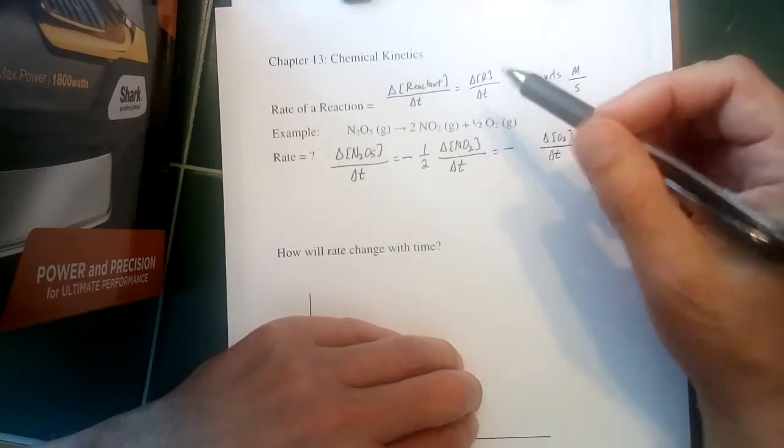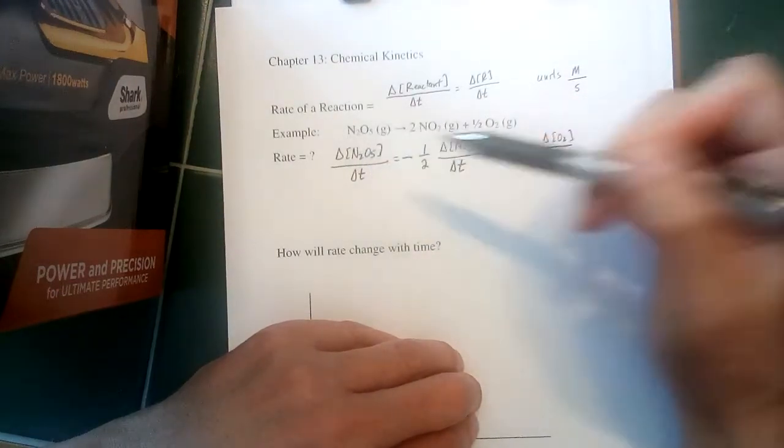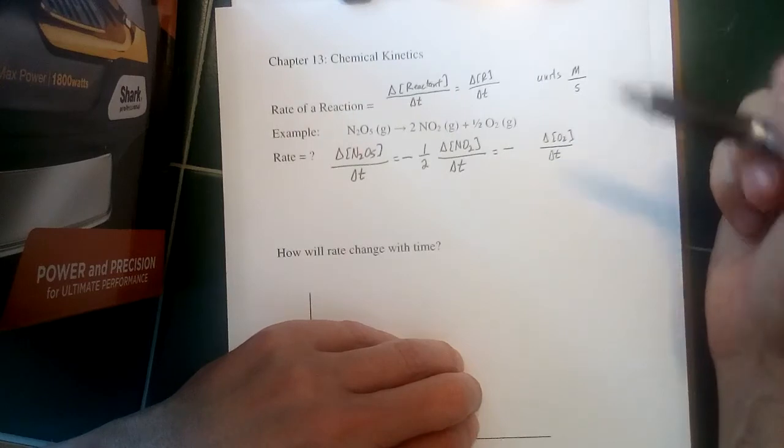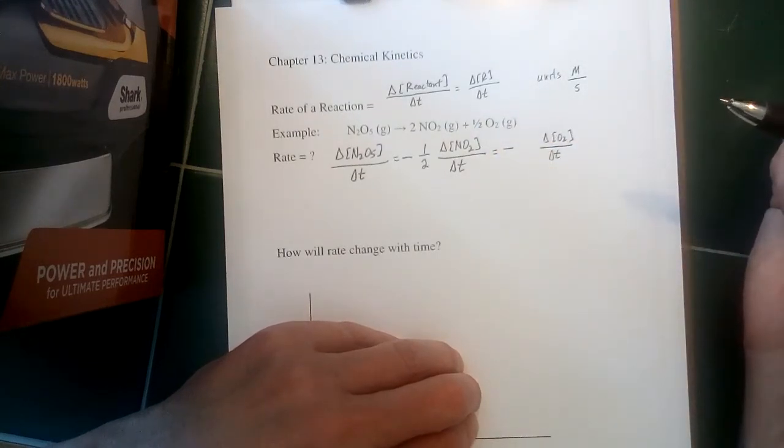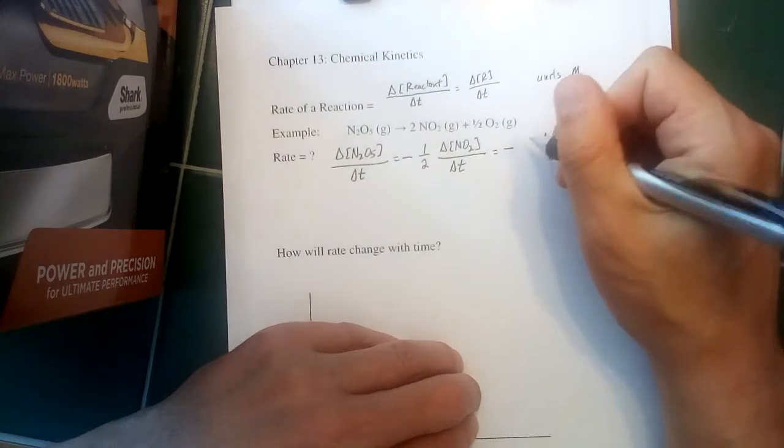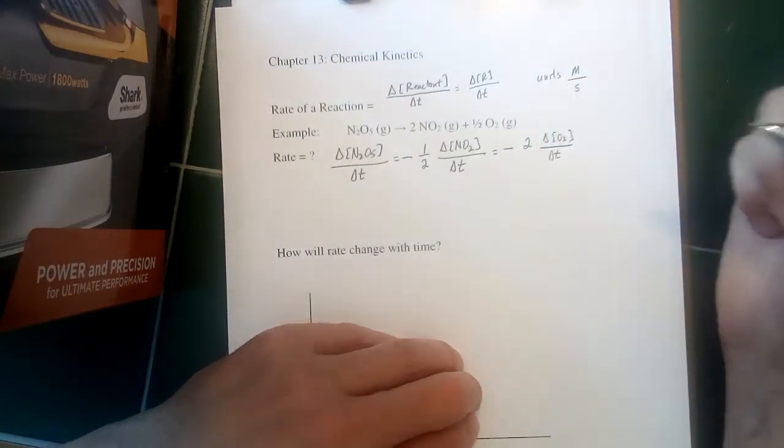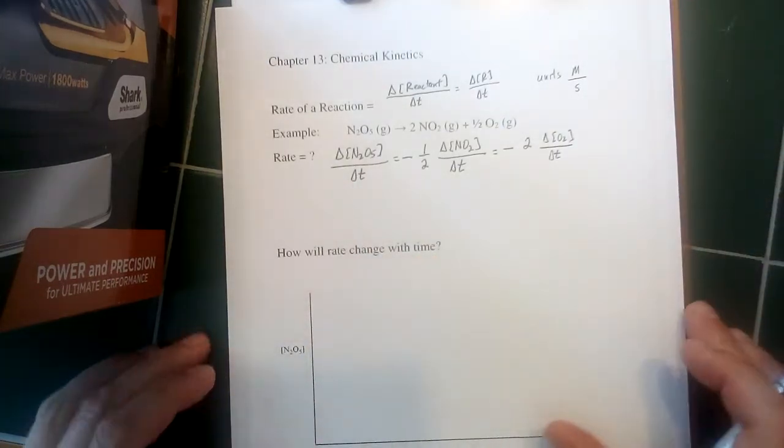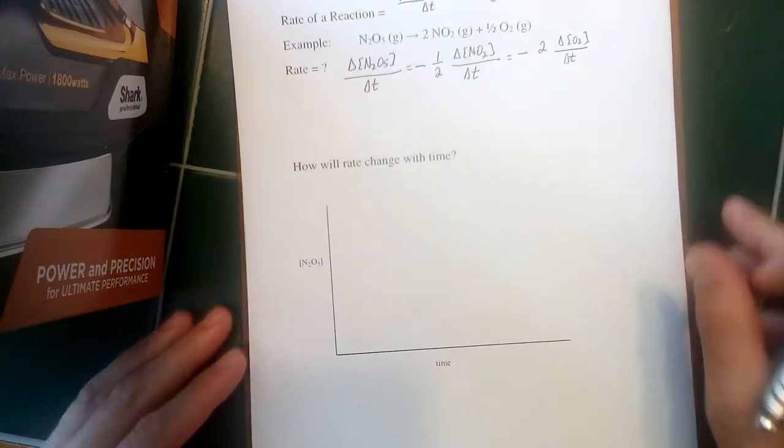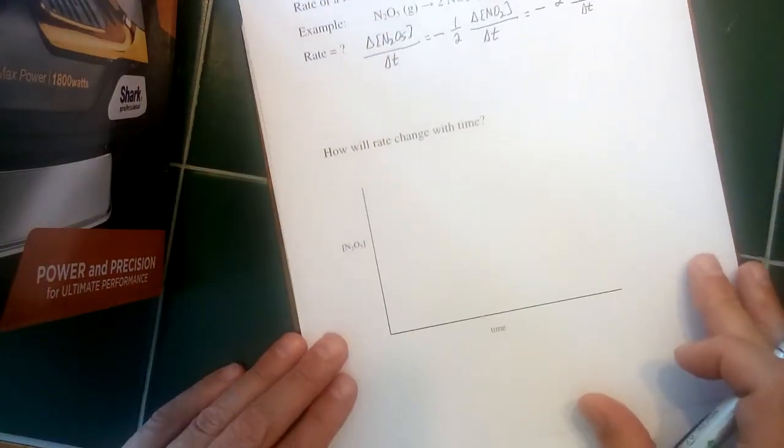However, the concentration of O2 is also changing at a different rate than the concentration of N2O5 is decreasing, because of the half here in the stoichiometric coefficient for the reaction. So in this case, we'd have to counteract that half by multiplying by two. But that way, we would get the same value for all of those ways of calculating the rate of this particular reaction.